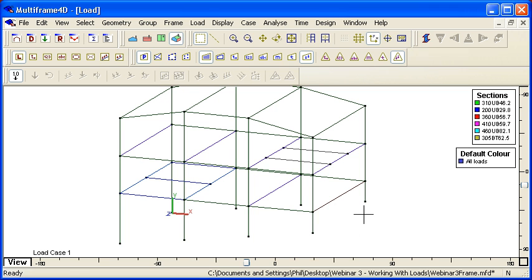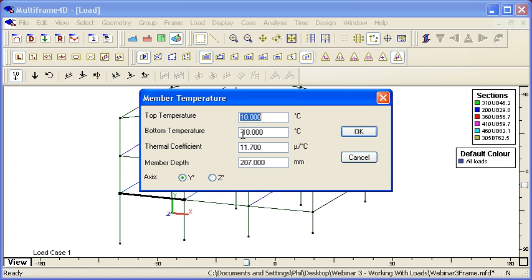So let's see how that's done in Multiframe. If we go over to the Multiframe model, we can select a member and from the load menu choose thermal load. So if we're putting in a constant thermal expansion, we can put in top and bottom temperature constant above ambient, the thermal coefficient, and then the depth of the thermal gradient.